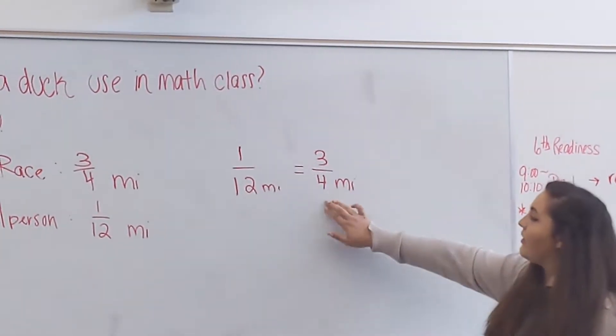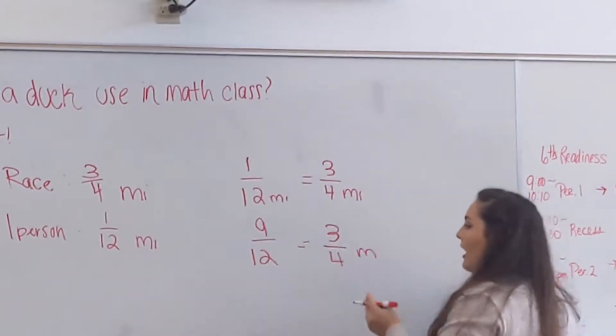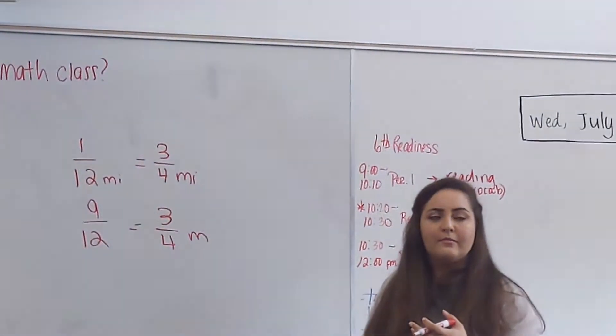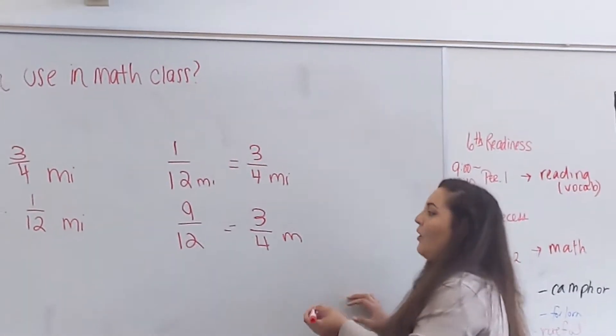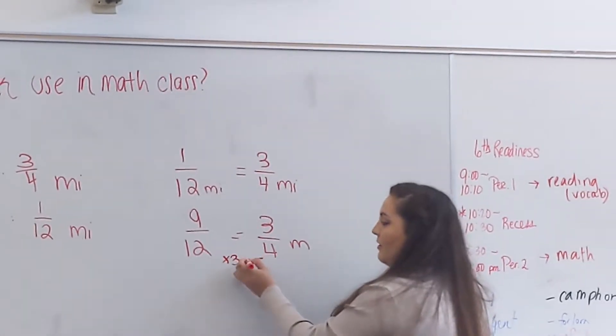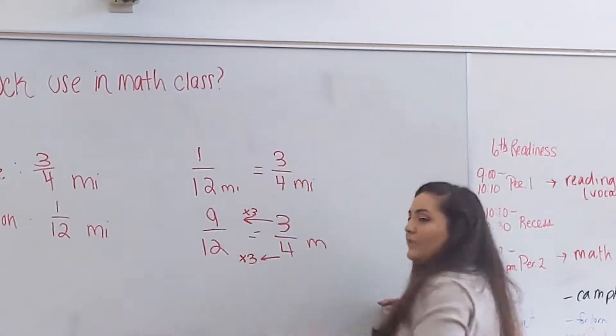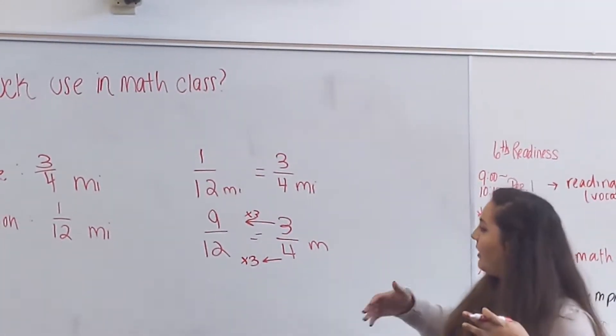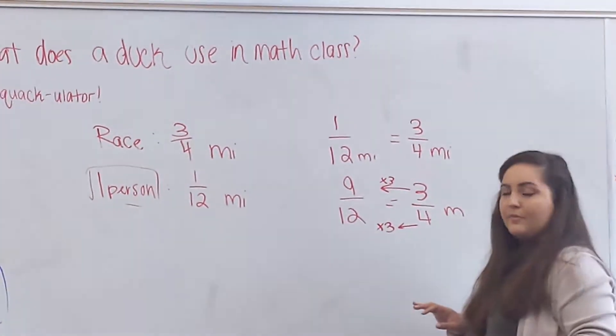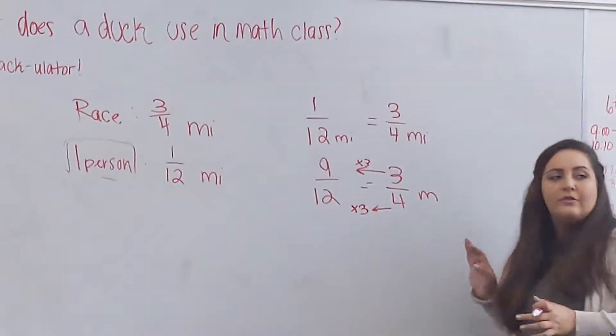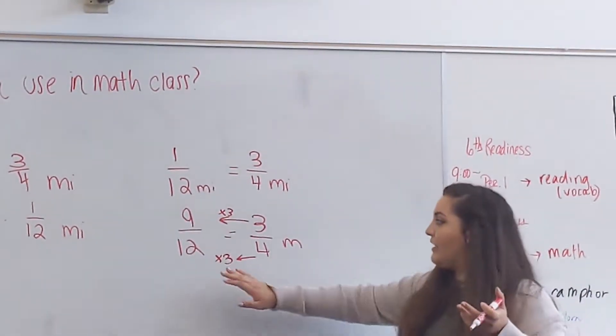Andrew said three quarters is equal to nine twelfths. How did you get that? We did four times three is equal to twelve, so we found the common denominator on the bottom. And then three times three is equal to nine. Remember, whatever you do to the bottom, you got to do to the top, right? Just like Andrew said, if one person ran one twelfth of a mile, that means that it would take nine people to run nine twelfths, right? And nine twelfths is the same as three quarters of a mile. So Andrew is right, the answer is nine people.